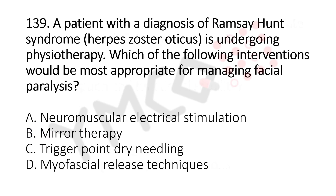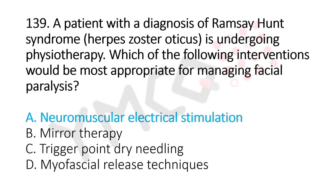Now let's move to question number 139. A patient with a diagnosis of Ramsay Hunt syndrome is undergoing physiotherapy. Which of the following interventions would be the most appropriate for managing facial palsy? Option A: neuromuscular electrical stimulation. Option B: mirror therapy. Option C: trigger point dry needling. Option D: myofascial release. The answer is option A: neuromuscular electrical stimulation.